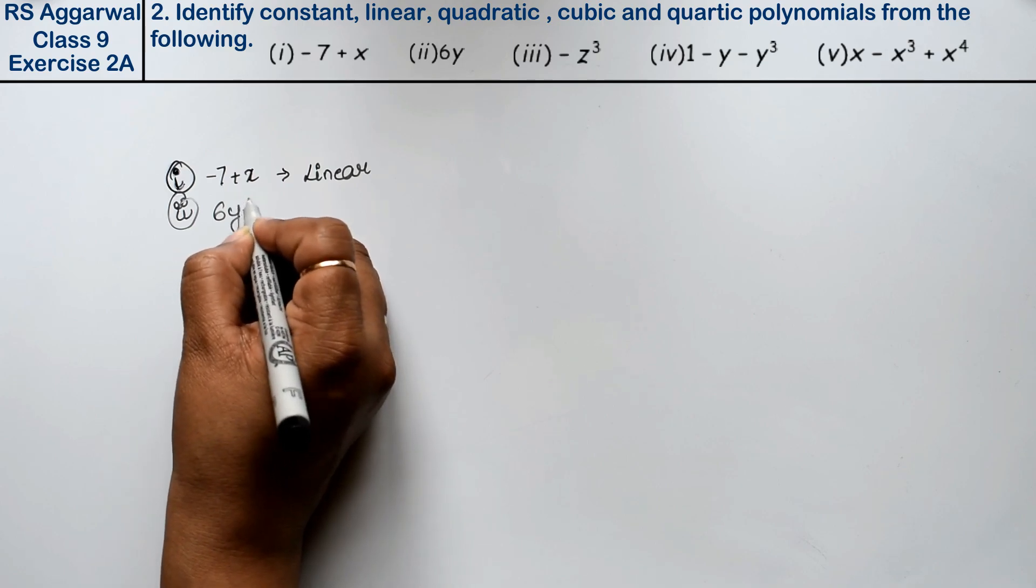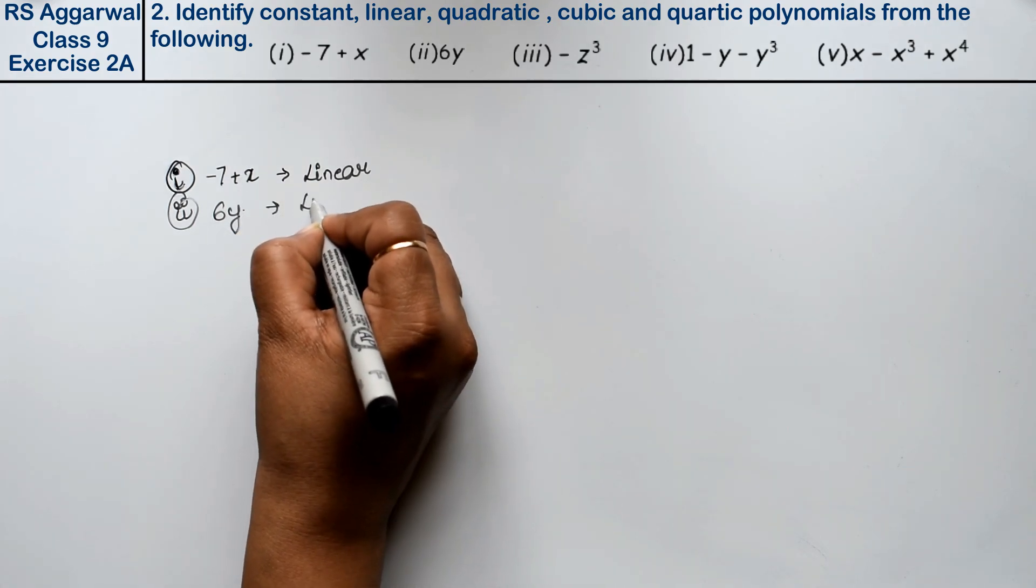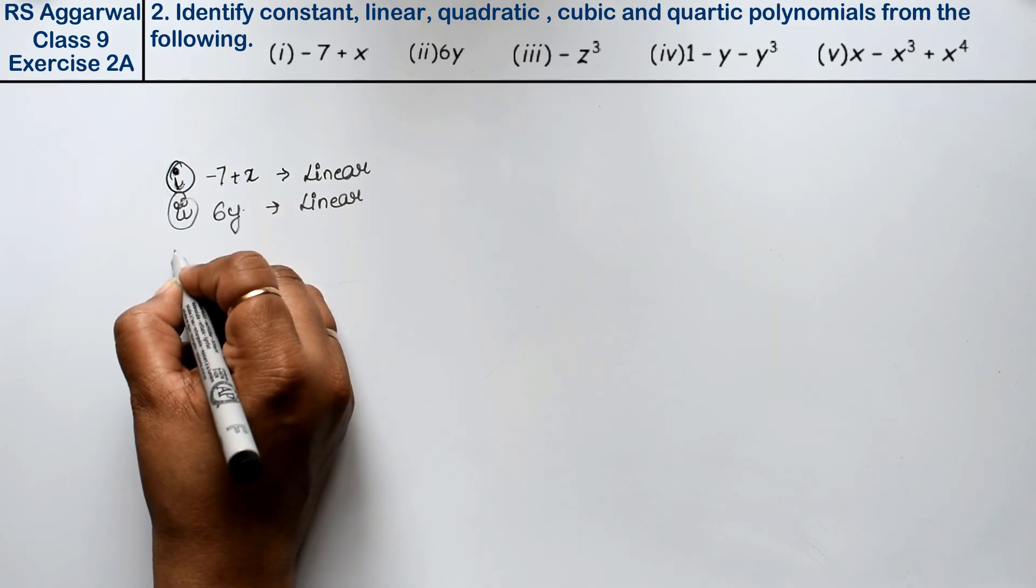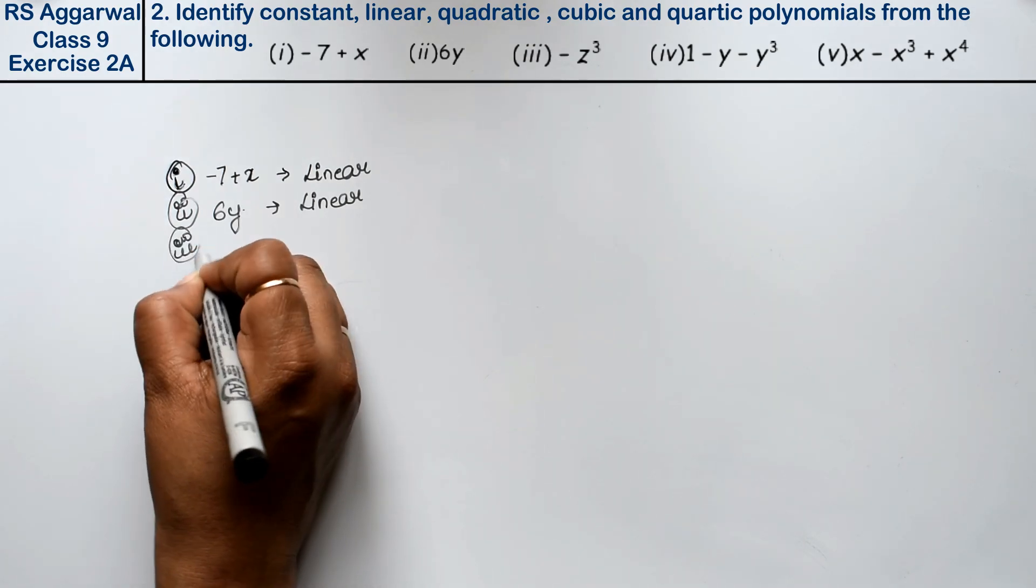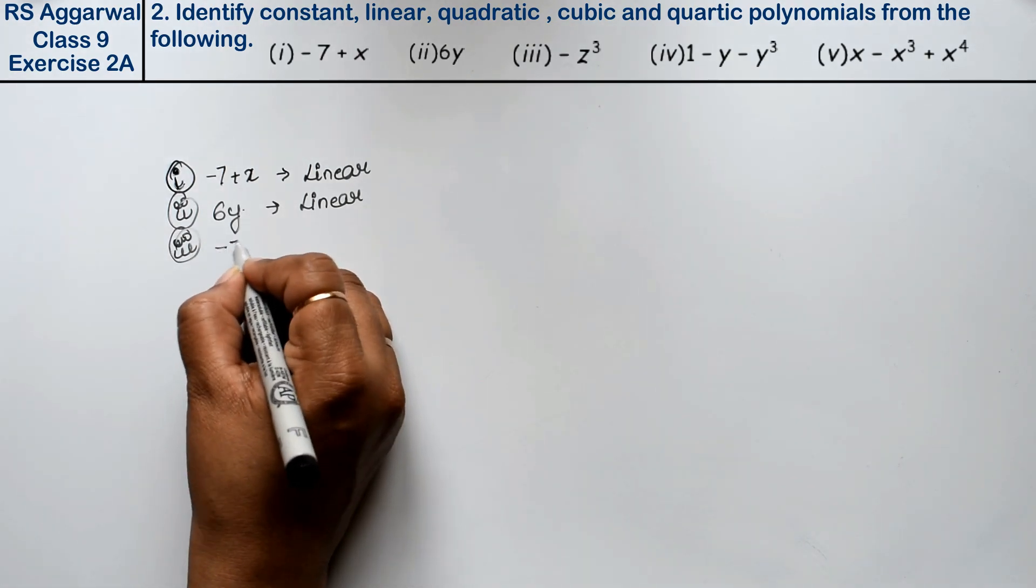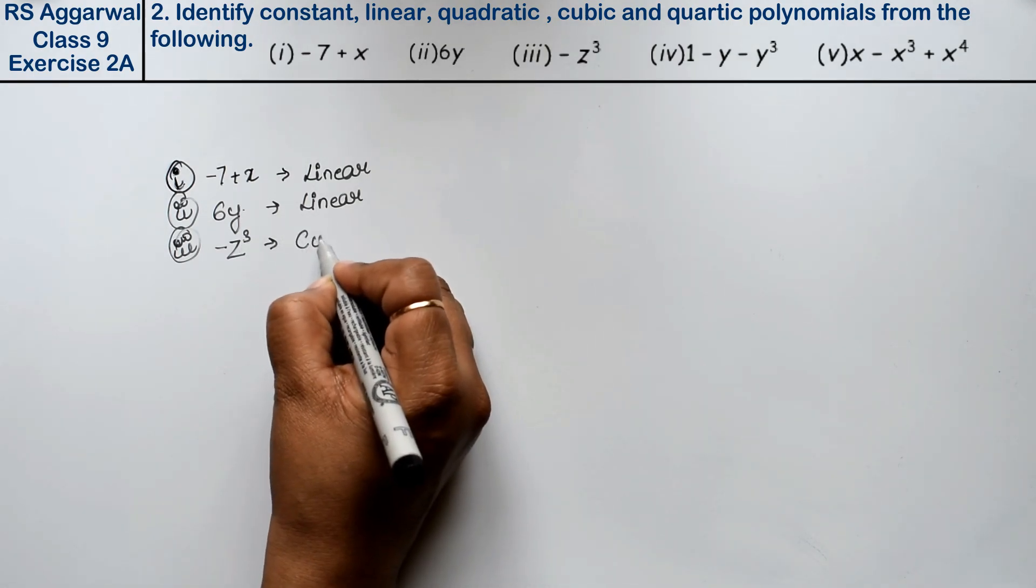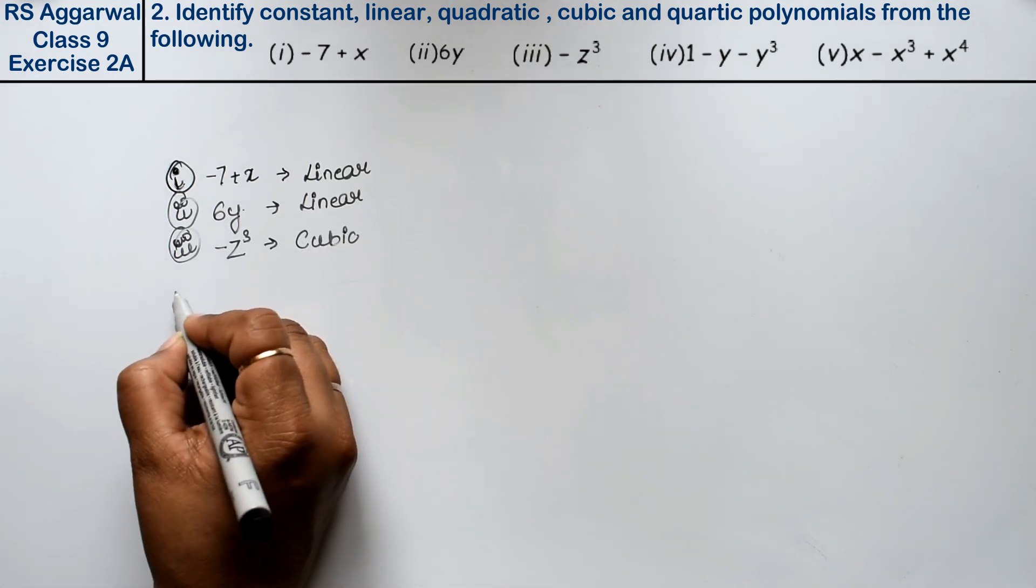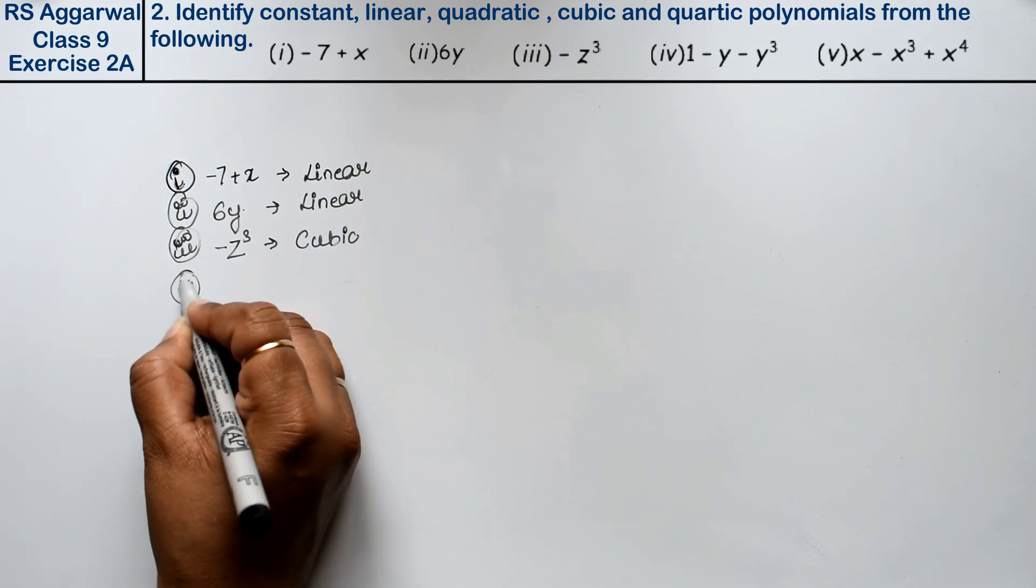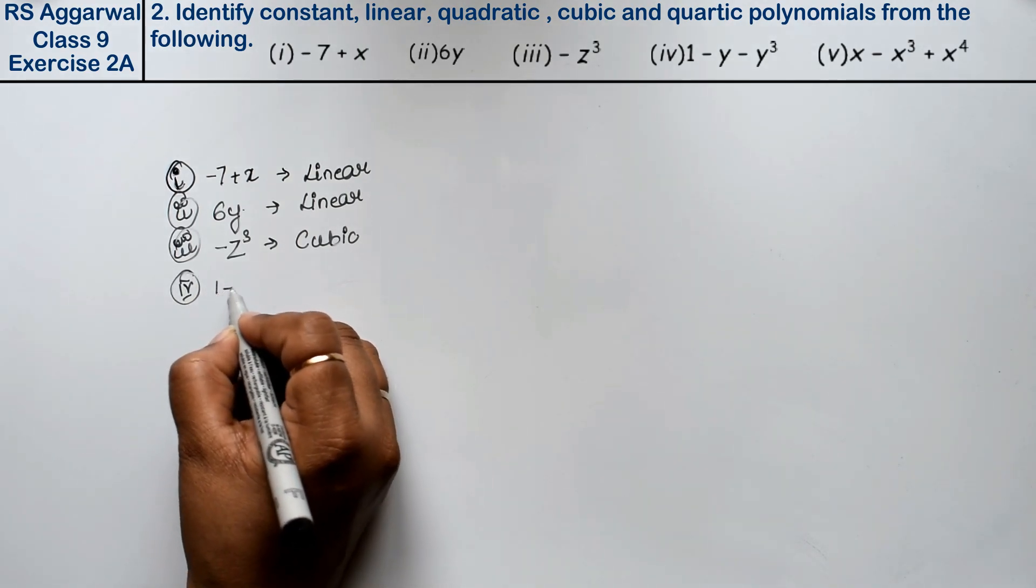Let's do the third part. Third part is -z³. Its power is 3, so that means cubic. Let's do the fourth part. Fourth part is 1 - y - y³. Its power is also 3, so that means it's a cubic.